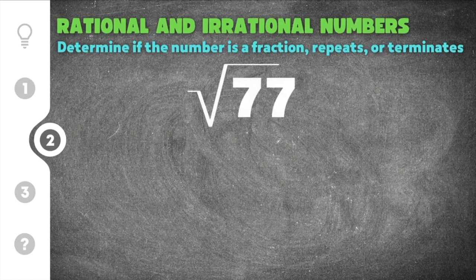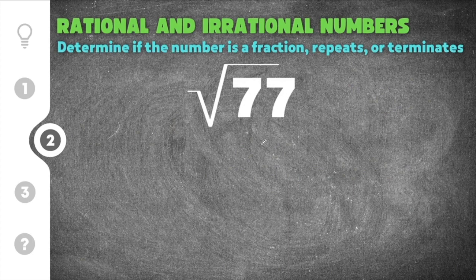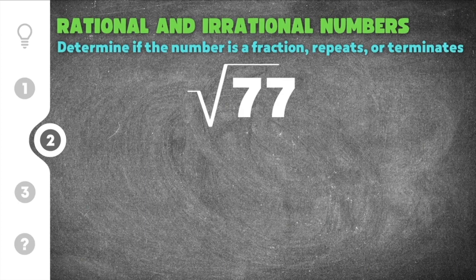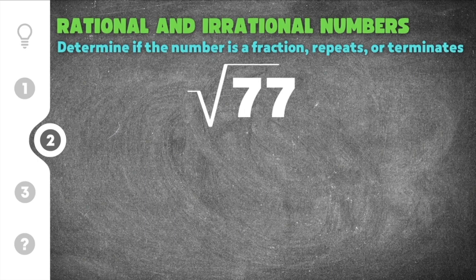Jumping down to our second practice problem, this one gives us the square root of 77. Now for square roots, unless it is a perfect square, it is going to be an irrational number. Now perfect squares are squares that when you take the square root, you end up getting a whole number. In the case of the square root of 77,